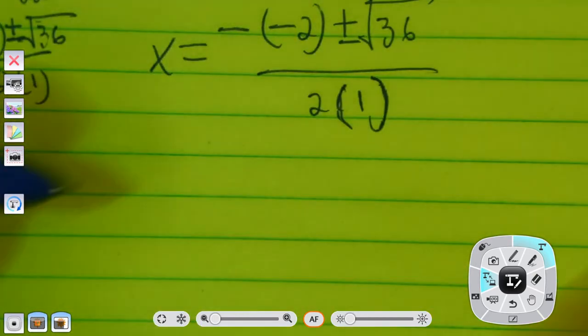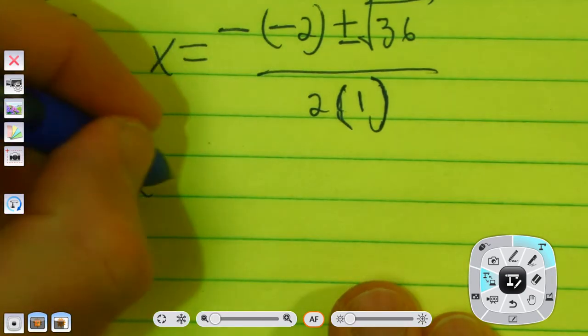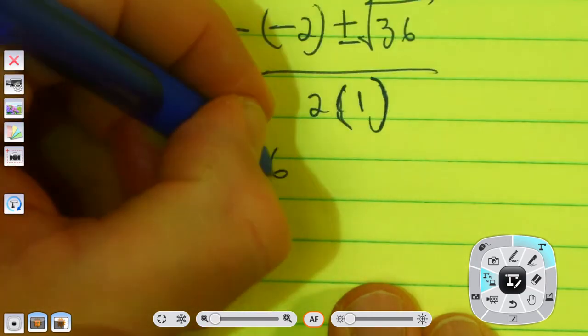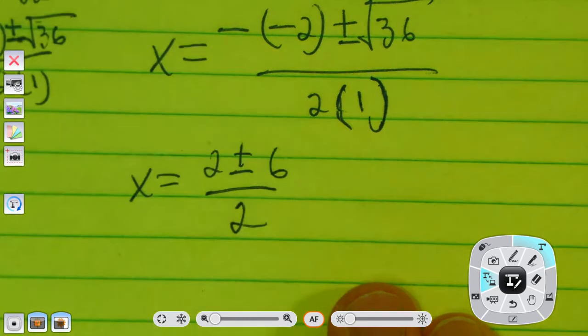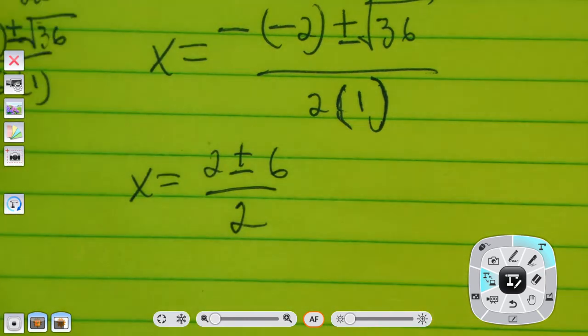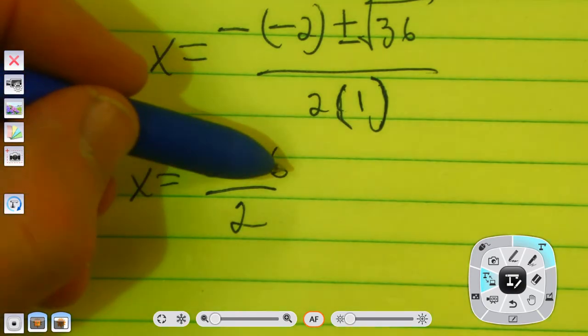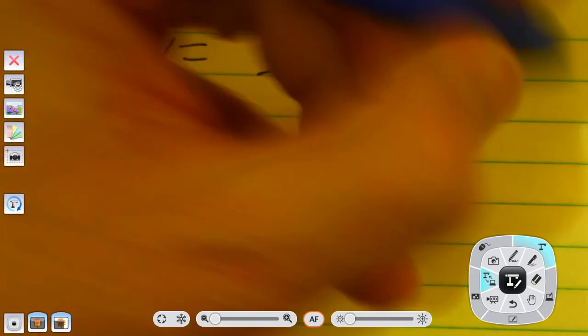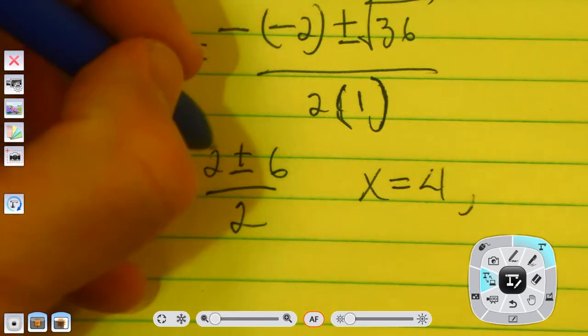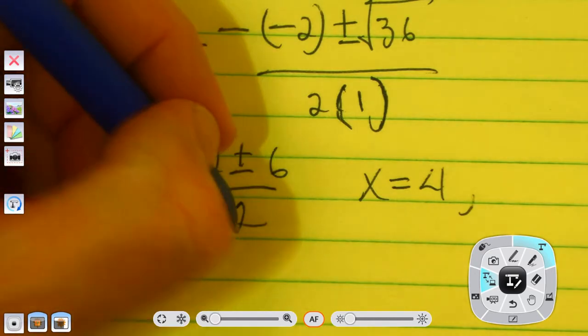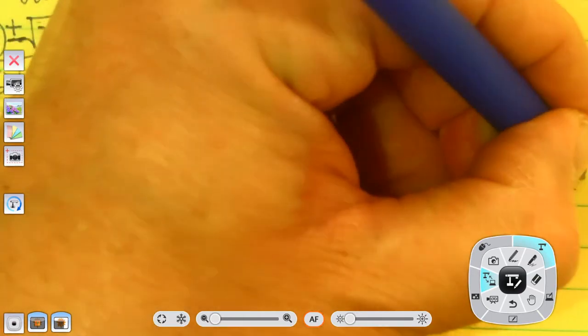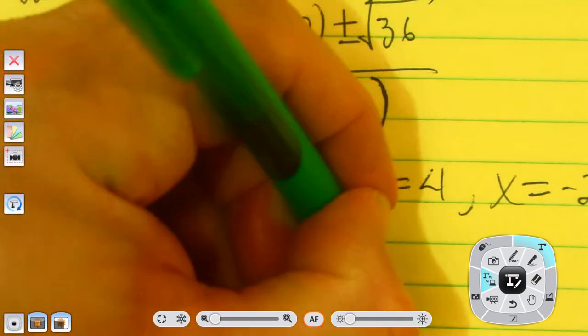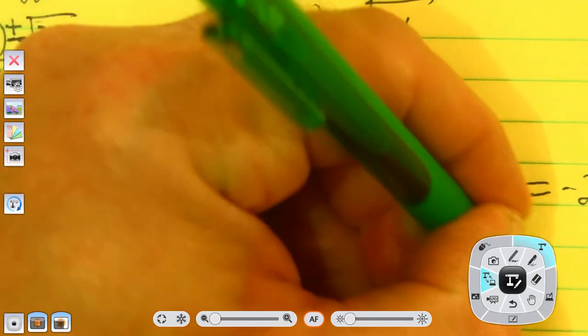So, to finish simplifying that negative negative 2, we all know that just becomes a positive 2. It must be plus or minus the square root of 36, which is just 6, over 2. I've got two answers here. It's 2 plus 6, which is 8, divided by 2, or 4. So, 2 plus 6, which is 8, divided by 2, or 4. Or, the other answer is 2 minus 6 would be negative 4, divided by 2, which would be negative 2. So, my solutions are negative 2 and positive 4.